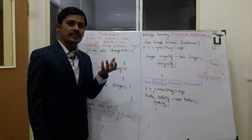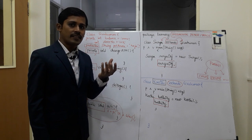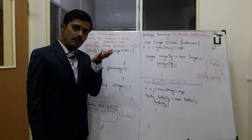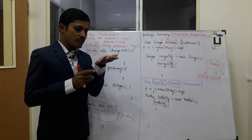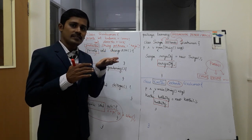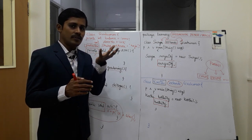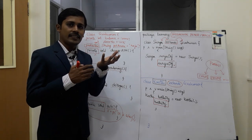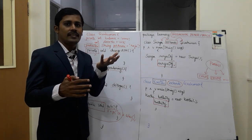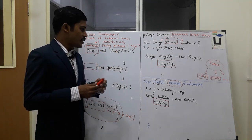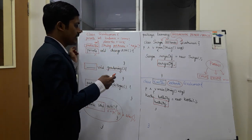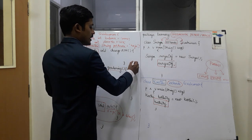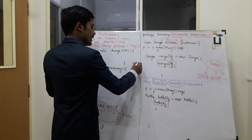Hierarchical Inheritance is a single parent with multiple children. One parent class can have multiple child classes.